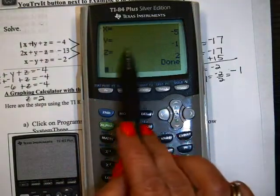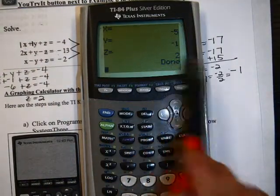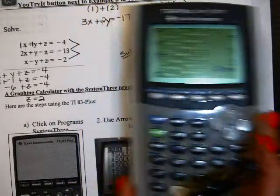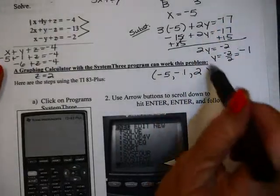X equals negative 5. Y equals negative 1. Z equals 2. Negative 5, negative 1, 2. I did it right. I hope this video has been helpful.